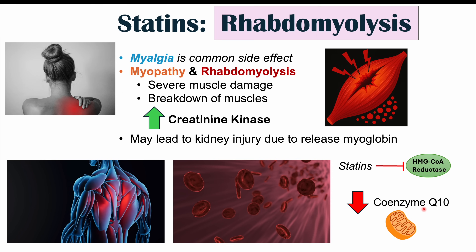If you don't have enough coenzyme Q10, we get mitochondrial dysfunction, and then we end up having unhealthy, damaged, and in some cases severely damaged muscles. This is the reason why we can see this occurring with statin use. Risk factors for getting rhabdomyolysis include a higher dose of statins, which is a big risk factor for getting myopathy and rhabdomyolysis.